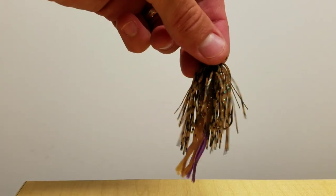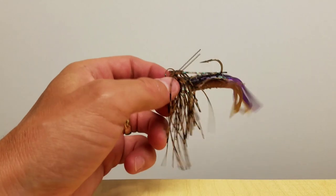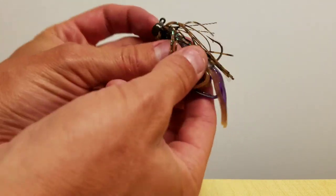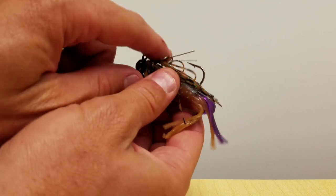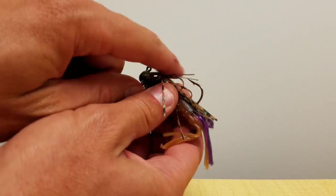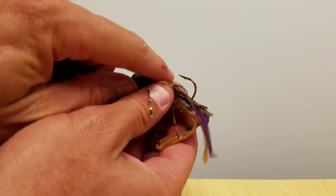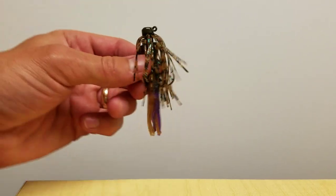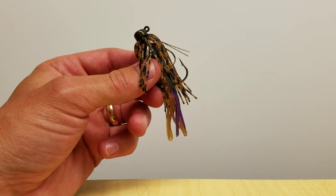Bang, bang. Look at that. That is a power finesse jig too. Throwing it with a tube on there. Cool thing is with this big hook. I've got a weed guard. Bing. I like it a lot.